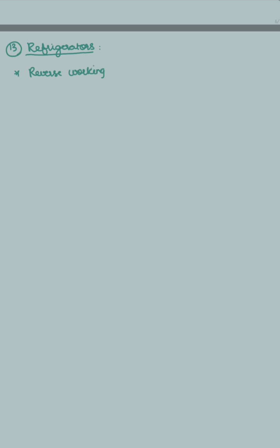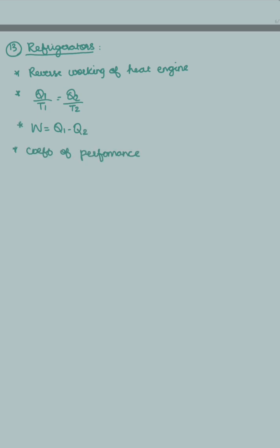Next are refrigerators. The working of a refrigerator is reversed compared to a heat engine. Here also Q1/T1 = Q2/T2, and work done W is Q1 − Q2. The coefficient of performance of a refrigerator is denoted by β, which equals Q2/W, also written as Q2/(Q1 − Q2) or T2/(T1 − T2).